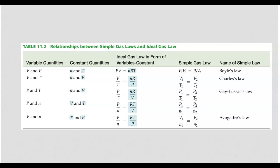But if we look at the ideal gas law and then we say okay well pressure and volume but nR and T are all constant, then we get the gas law P times V equals P2 times V2. Or same thing is true for volume and temperature.